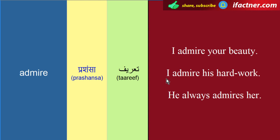Doosra sentence: 'I admire his hard work' — mein us ki mehnat ki tarif kerta hoon, mein us ki mehnat ki parashansa kerta hoon. Agar koi mehnati hai toh hum usse hard working individual kehtay hain. Teesra sentence: 'He always admires her' — woh hameshah us ki parashansa kerta hai, woh hameshah us ki tarif kerta hai.